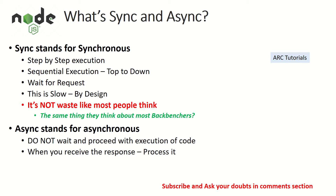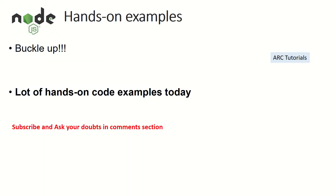The next topic is async. Async stands for asynchronous, which means we do not wait for anything — we proceed with the execution of code. When request 1 comes in, it will be called and it will not wait; it will proceed to request number 2. When the response is received for a request, it will process and show it. That's the theoretical explanation — hopefully you have the basic fundamental idea. Now let's get started with hands-on examples.